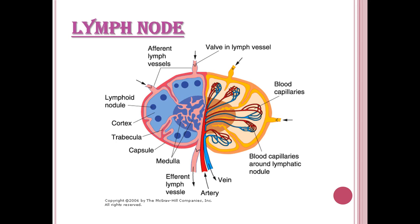Multiple afferent channels at the periphery allow lymph to enter the lymph node, while a single efferent channel at the hilum allows cleaned and filtered lymph to exit into the lymphatic channel. Blood capillaries are visible around the lymphatic nodules. Trabeculae, which are extensions of the capsule, send septa inside dividing the node into different lobes and lobules.